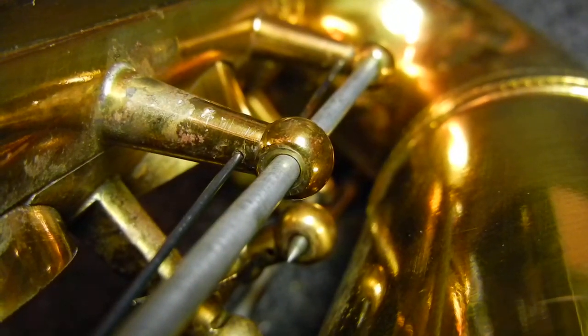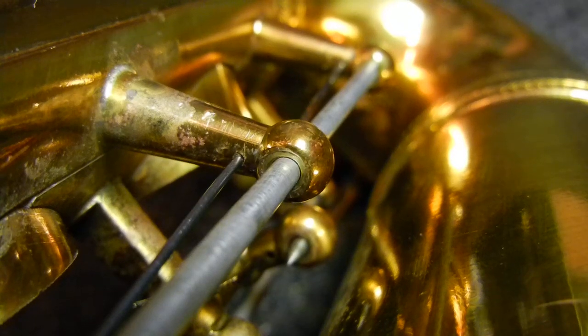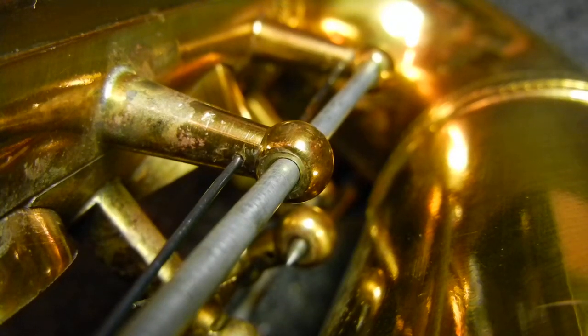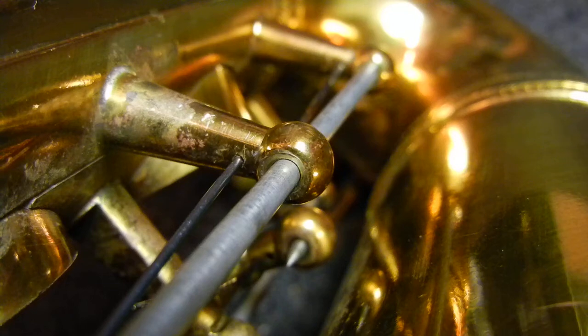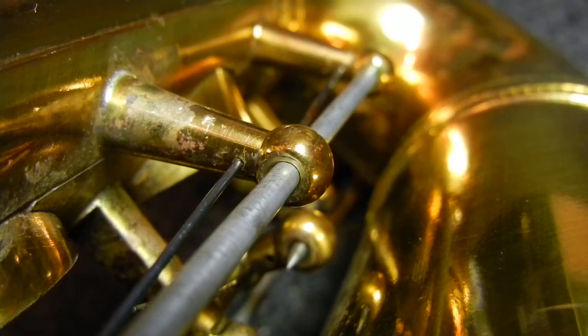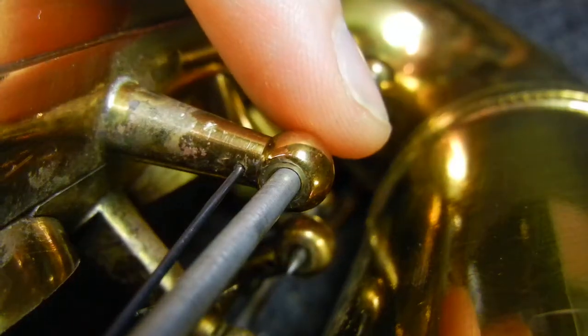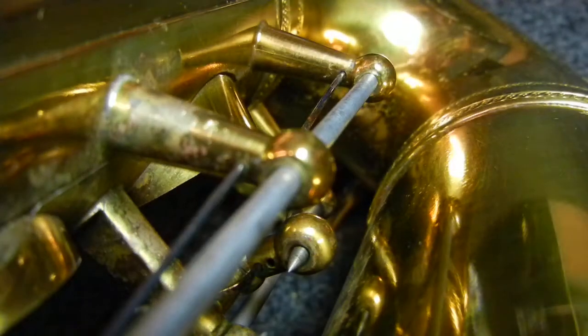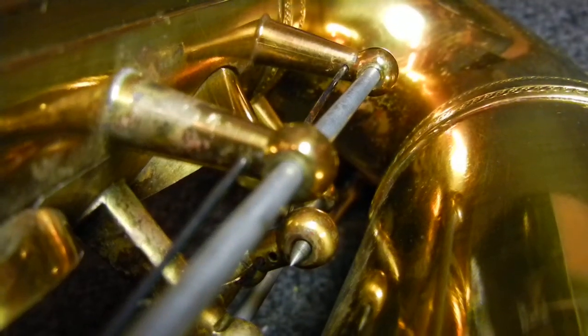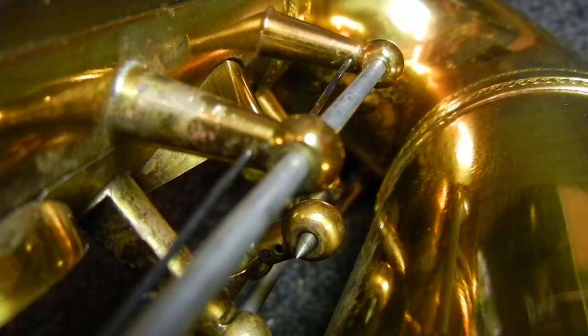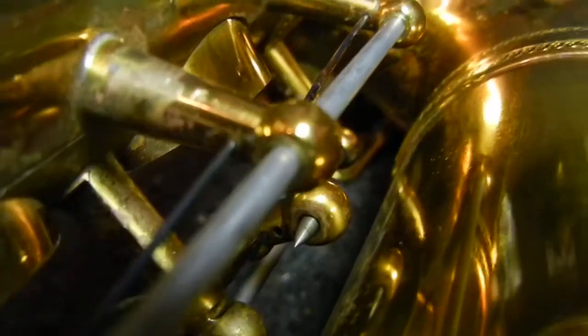Now if you look closely at the rod going through this post you can see that there is a small cylinder of metal actually soldered inside the post to tighten up the fit of this rod. You can see it with the different colors, there's kind of a ring around the post there, and you can also probably see that I've faced it flat.